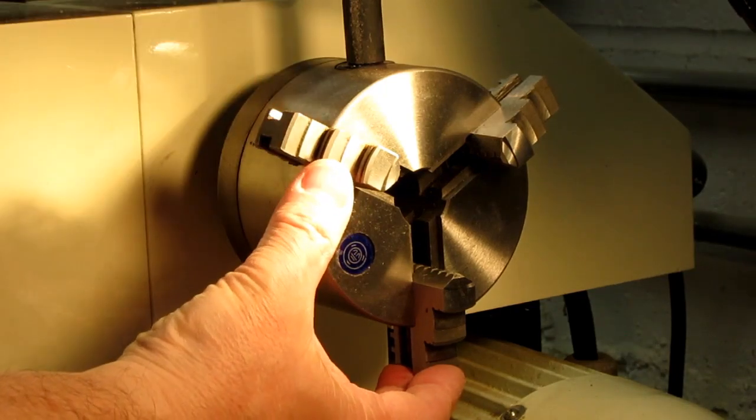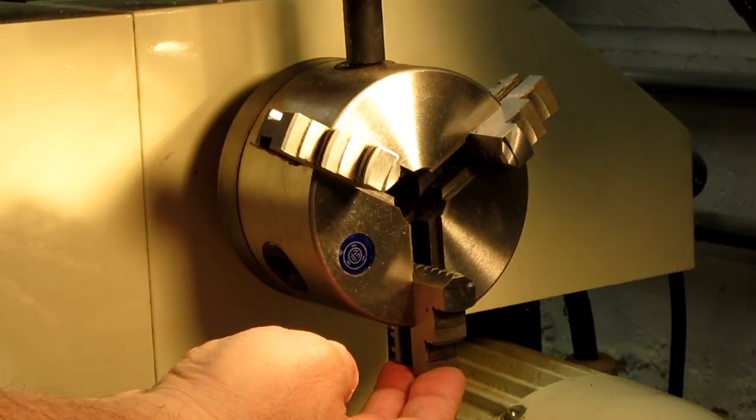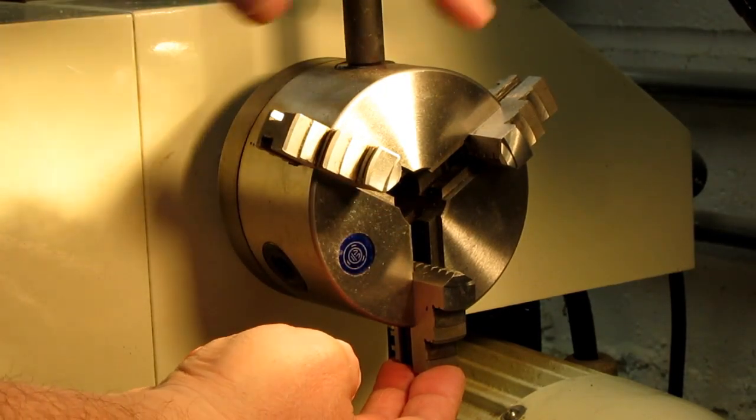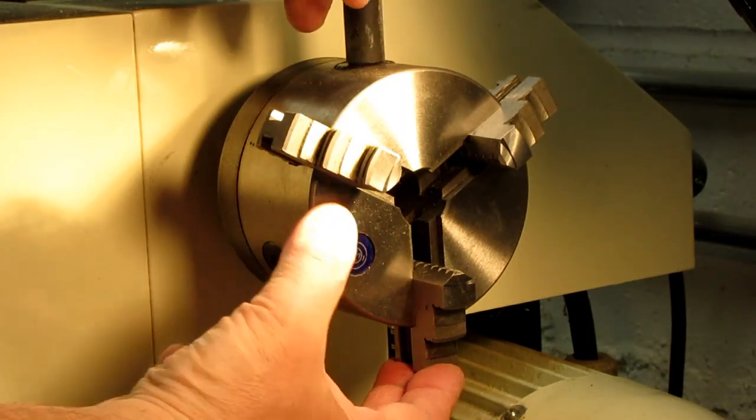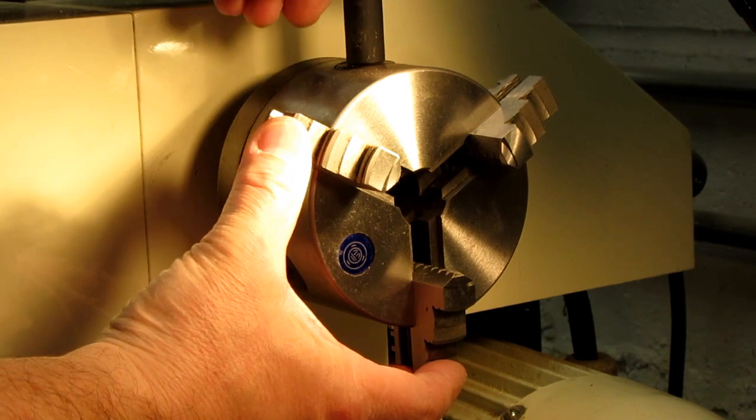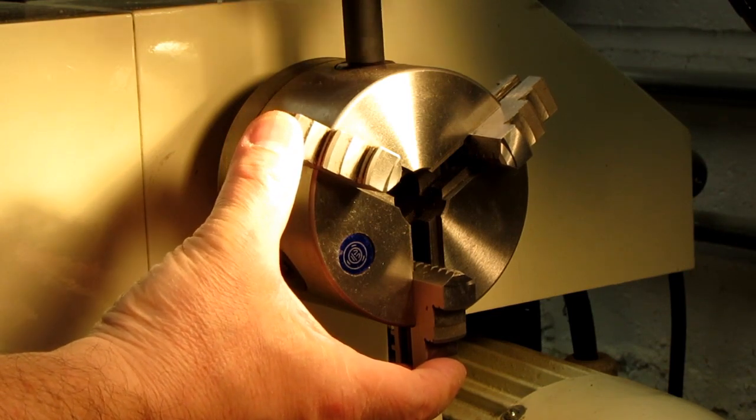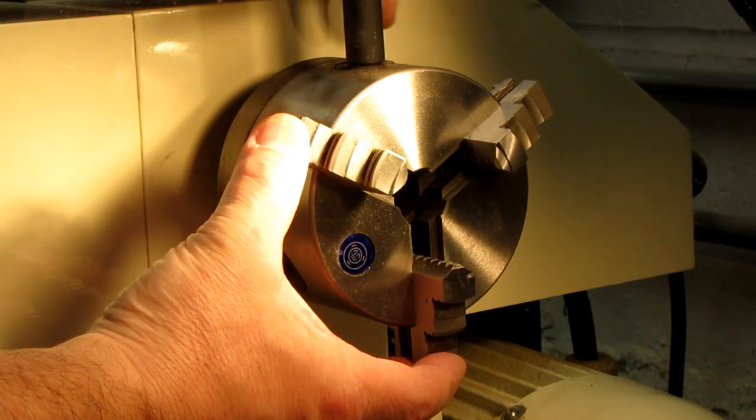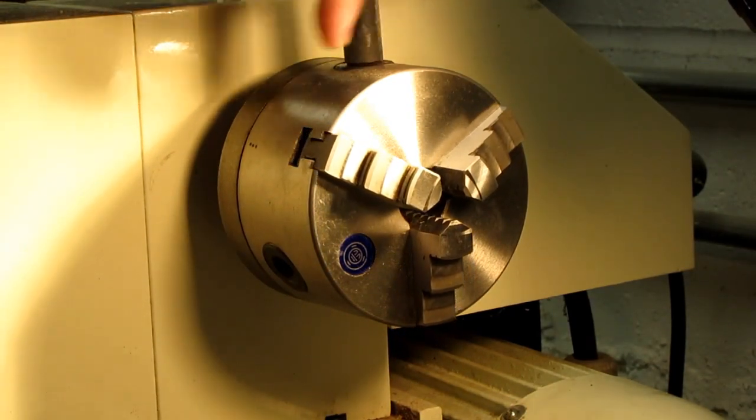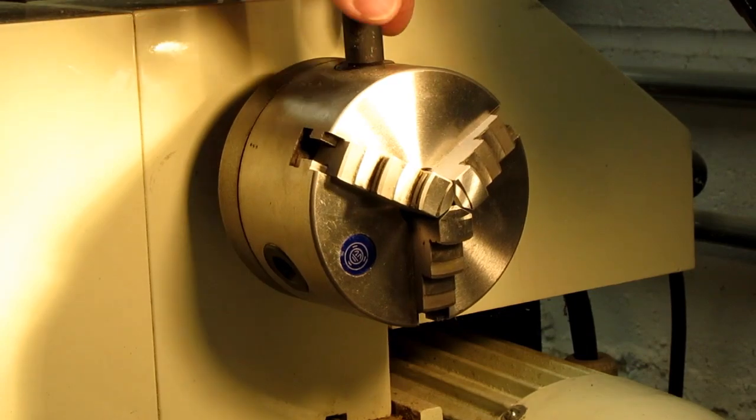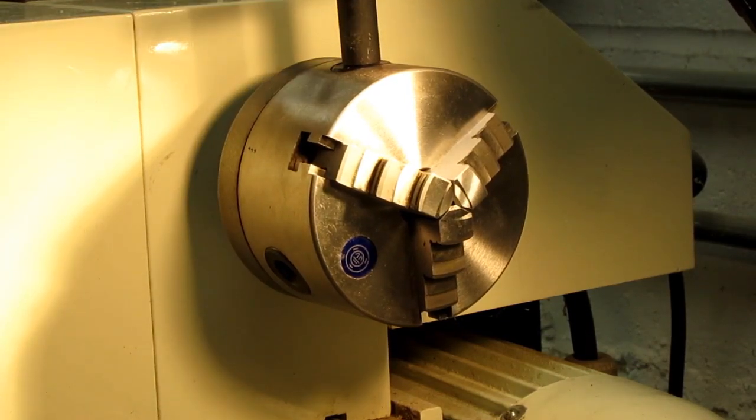So I start turning clockwise now. I was turning counterclockwise before until the one dropped in. I have to push on this one with my thumb just a little bit because it doesn't want to go down by itself. Now they're both grabbing, and I keep turning the jaws until they come together.